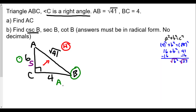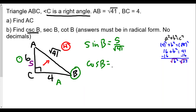One way to do this is to memorize the ratios, which you can do. But what we want to do is use sine, cosine, and tangent first. Sine of B — we're not looking for the angle, we're looking for the ratio. Sine of B is leg opposite over hypotenuse, so it's 5 over √41. Cosine B is leg adjacent over hypotenuse, which is 4 over √41. And the tangent ratio is leg opposite over leg adjacent, which is 5 over 4.